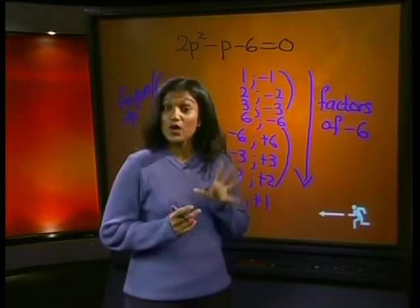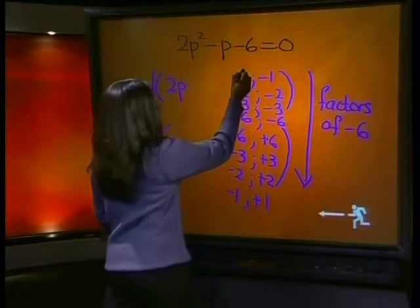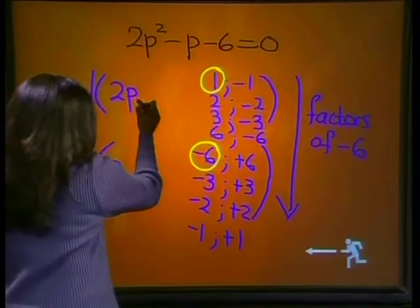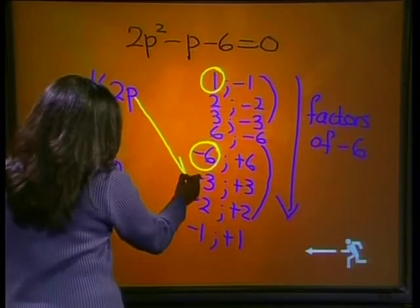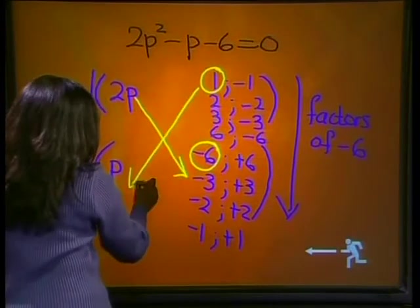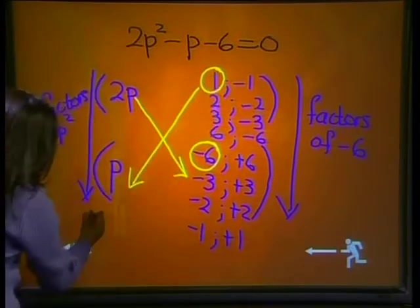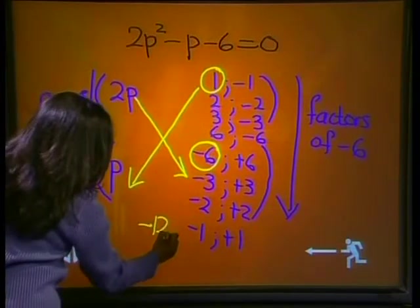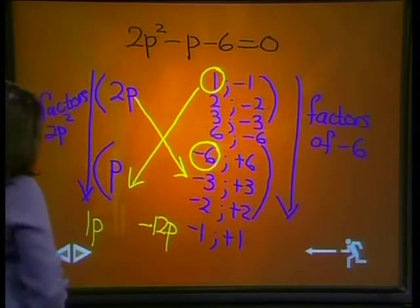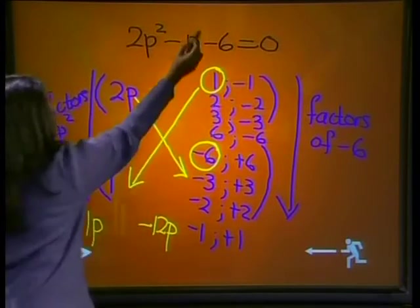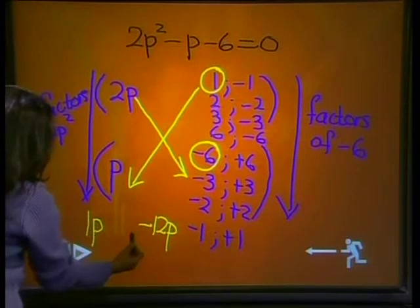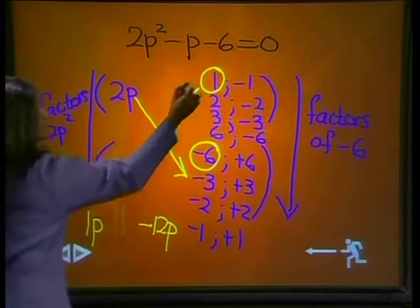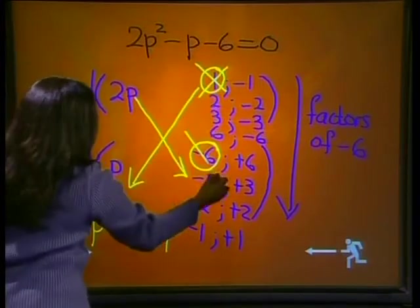Now we need to make sure that we get the middle term. So let's choose or work with our first set of factors: 1 and -6. Now I'm going to multiply this and this. 1 × p is 1p. 2p × -6 is -12p. And I'm going to add these two factors together and see whether it gets us to the middle term. 1p - 12p gives me -11p which is not the middle term. So these first set of factors are incorrect.